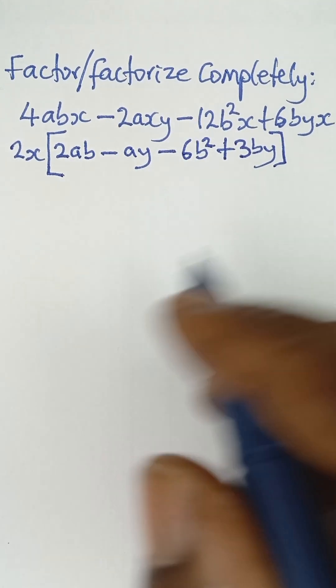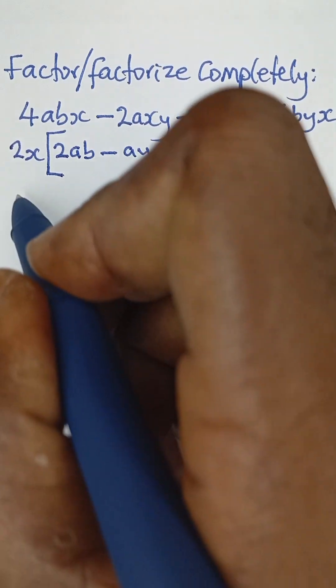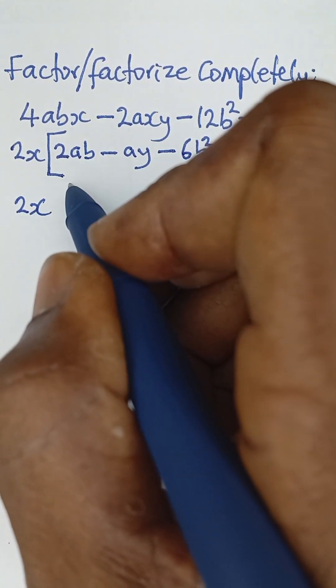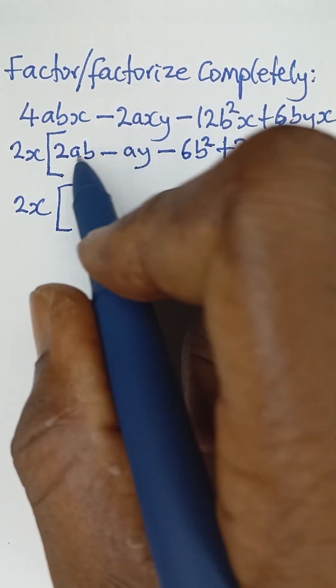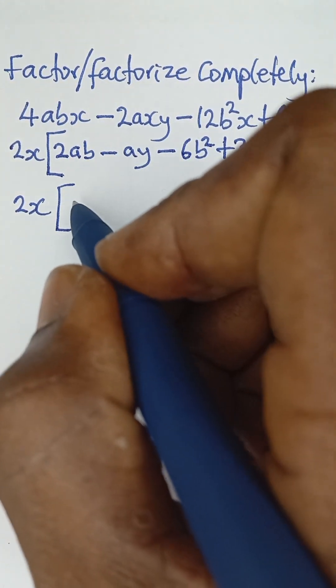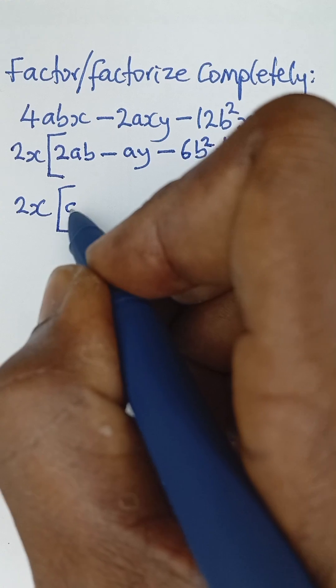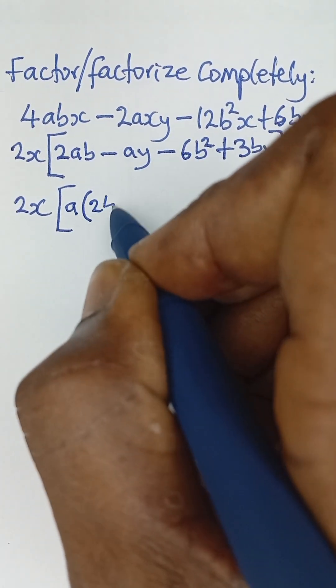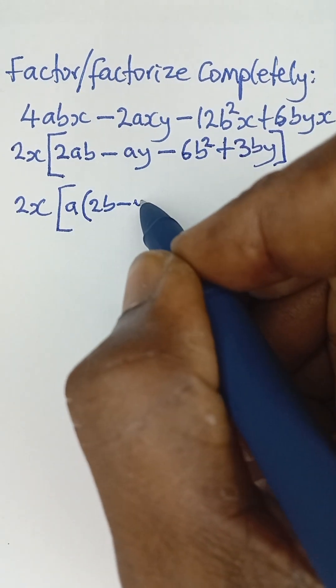Now, the next thing for me to do, I can factor by grouping. So I see I have my 2x outside and then introduce a bracket. To factor by grouping, what is common to these two is simply a that is common to them. So this divided by a, I'm left with 2b minus this divided by a, I'm left with y.